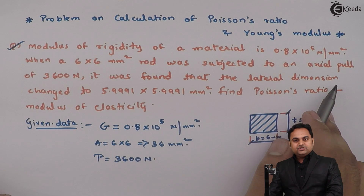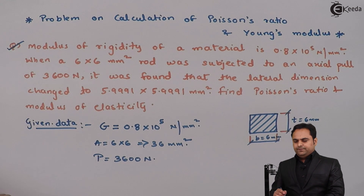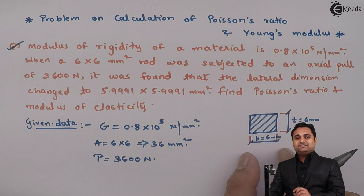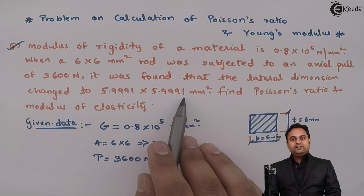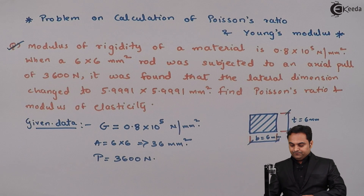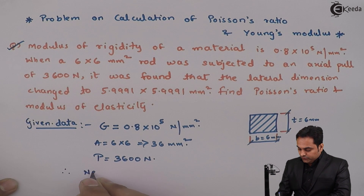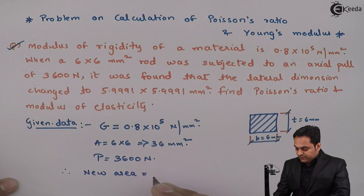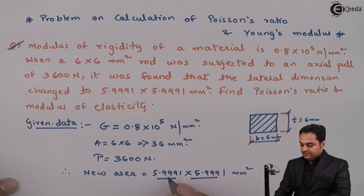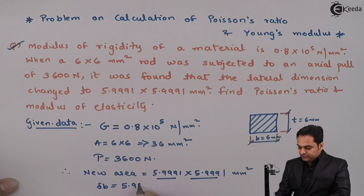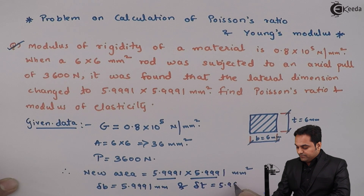It was found that the lateral dimension changed. When the load was applied, the width of 6 mm gets reduced — it becomes 5.99991 mm, and the thickness is also reduced to 5.99991 mm. So the new area is equal to 5.99991 into 5.99991 mm square. From this, delta B equals 6 minus 5.99991 mm and similarly delta T the thickness change is also 6 minus 5.99991 mm.